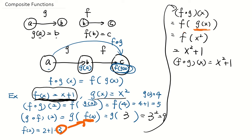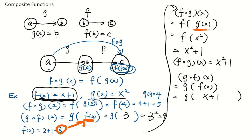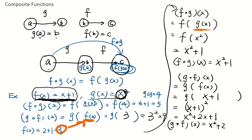Now let's do it backwards. What if I have g of f of x? Similarly, by definition, g of f of x is g of f of x. f of x equals x plus 1, so replace f of x with x plus 1. Now g of x plus 1 means replacing x in g with x plus 1. Since g of x is x squared, g of x plus 1 is x plus 1 squared. Expanding, you get x squared plus 2x plus 1. So g of f of x is x squared plus 2x plus 1.